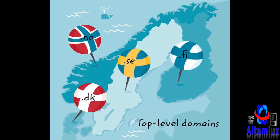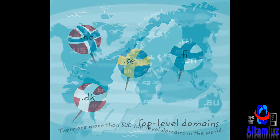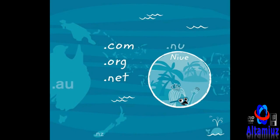They're called top-level domains. The abbreviation at the end of an internet address, like .se, is called a top-level domain, and there are over 300 different top-level domains in the world. Danish websites often have .dk at the end, while many sites in Finland end with .fi, and in Norway they use .no. All the countries in the world have a similar letter code. Have you seen addresses that end in .com, .net, or .org? These are addresses that do not indicate where in the world the server is located, but which can be found anywhere.